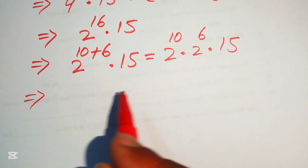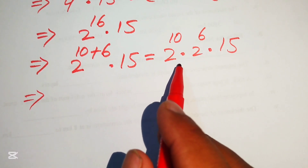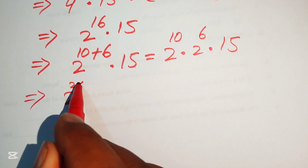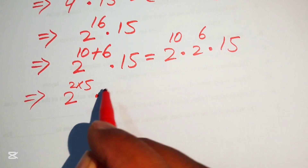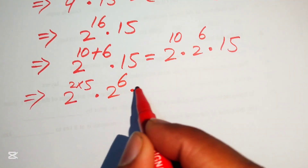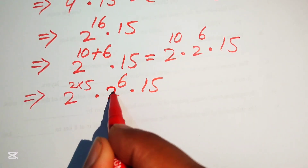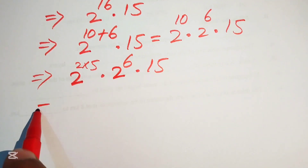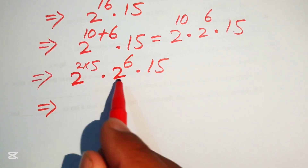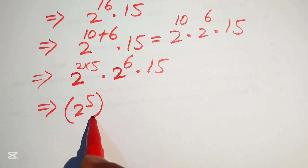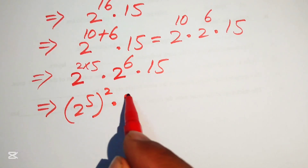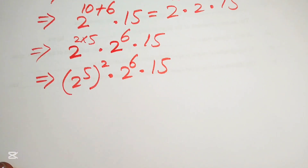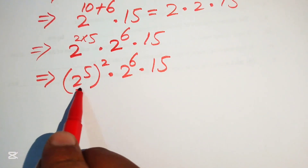In the next step, we focus on 2 to the power of 10 and write the exponent 10 as 2 multiplied by 5, giving 2 to the power of 2 times 5, multiplied by 2 to the power of 6, multiplied by 15. We rewrite this as (2 to the power of 5) whole squared, multiplied by 2 to the power of 6, multiplied by 15. Our next target is to find the values of 2^5 and 2^6.